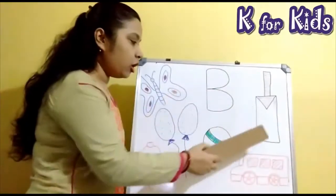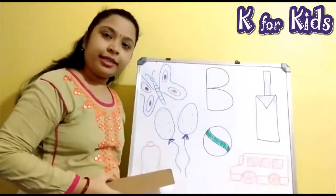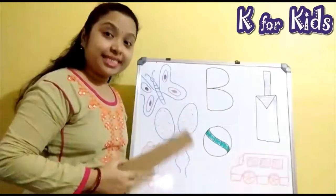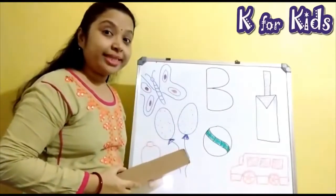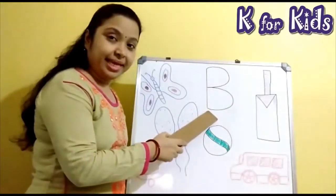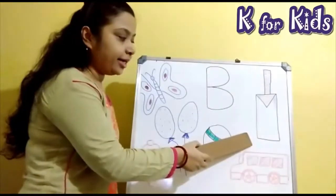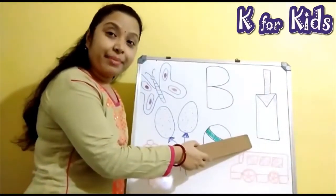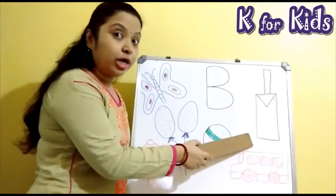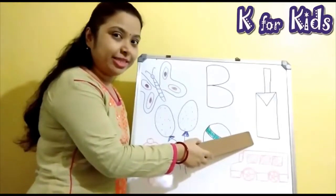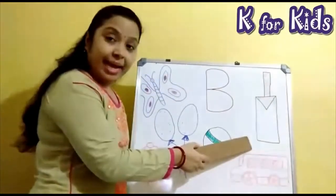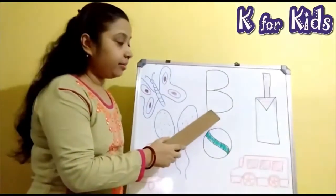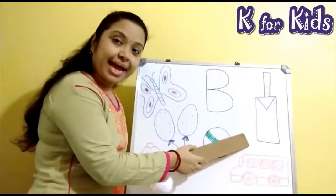Now I have drawn some pictures on the board. All these objects start with the alphabet B. Now look here. What is this? This is a bag. You all love to play with the bag. Bag starts with the alphabet B. B for bag.